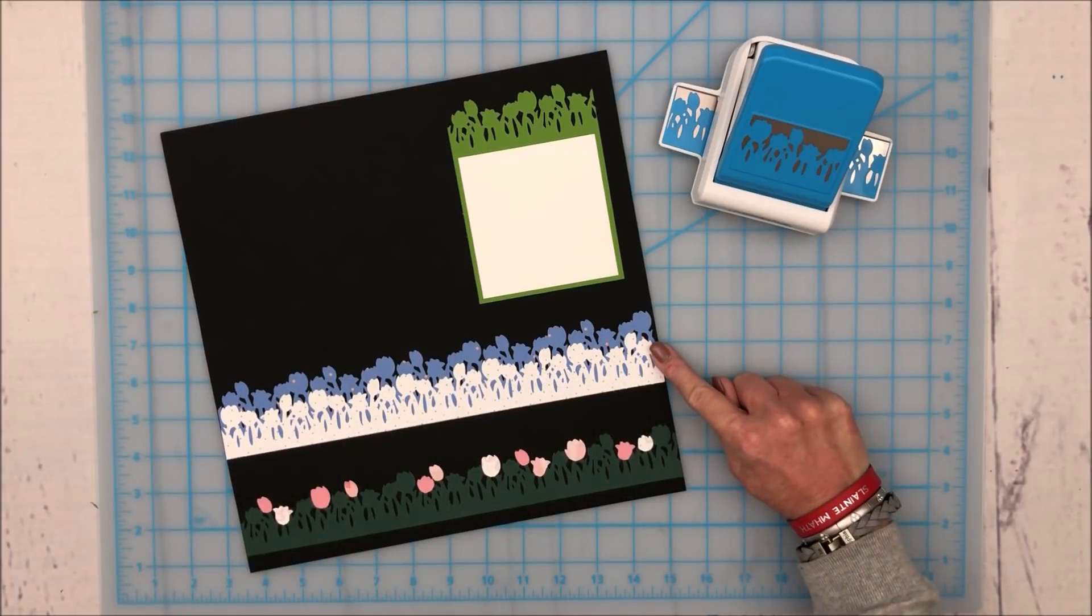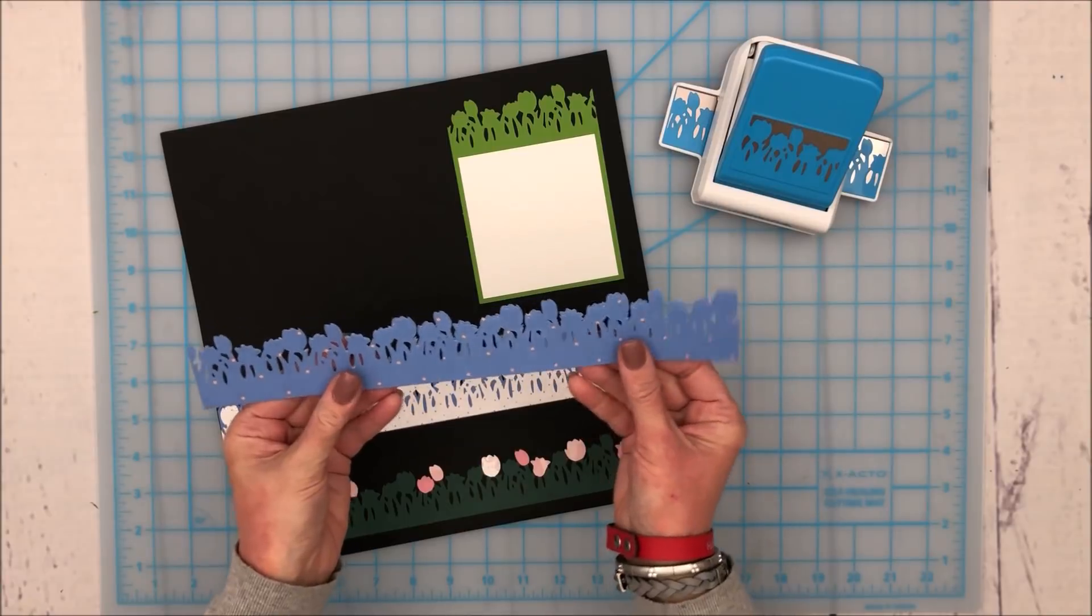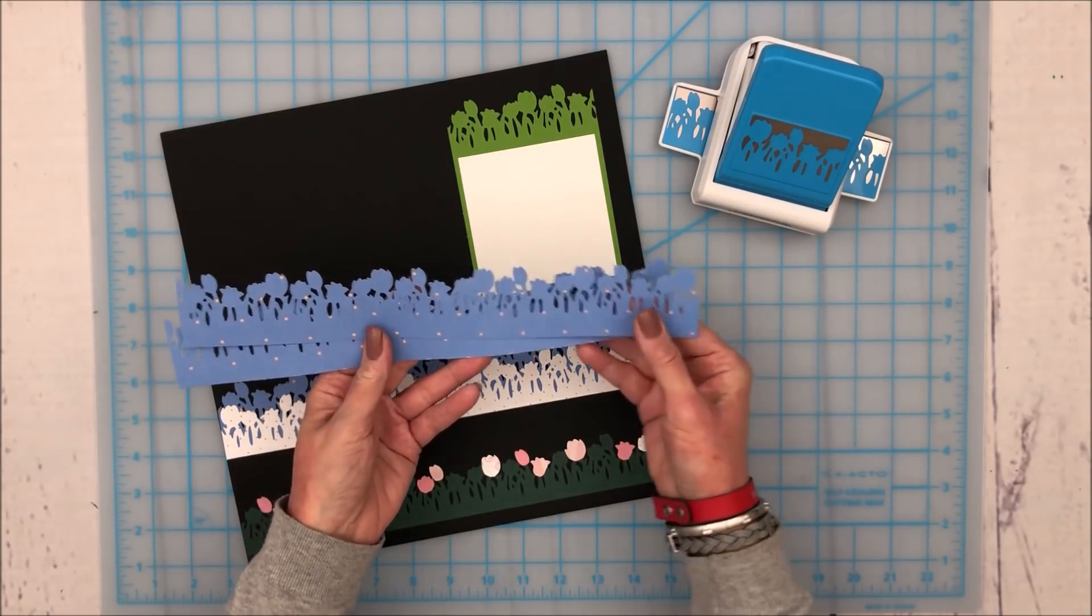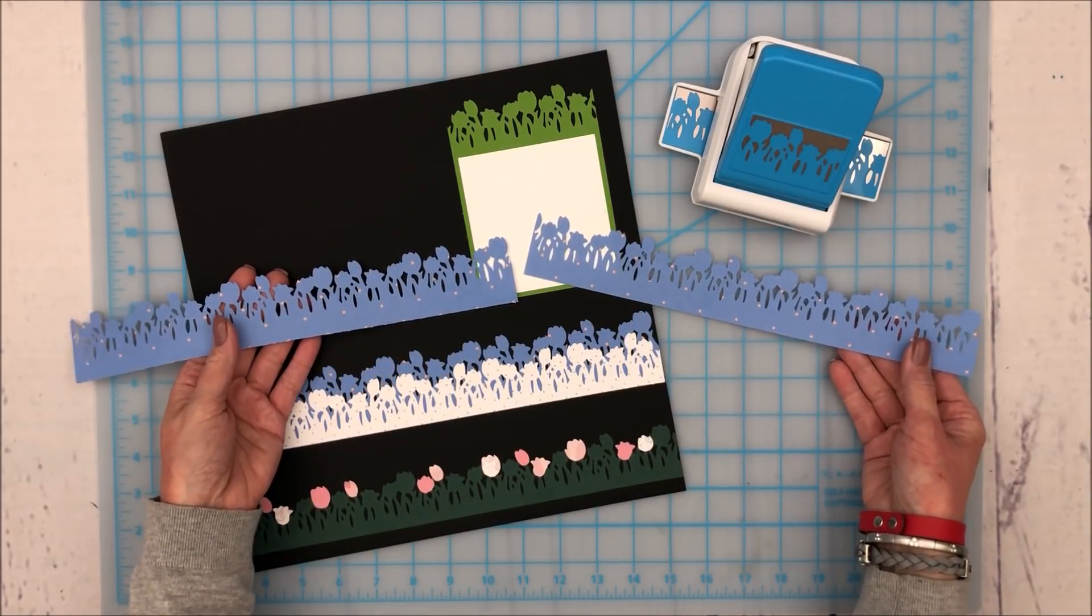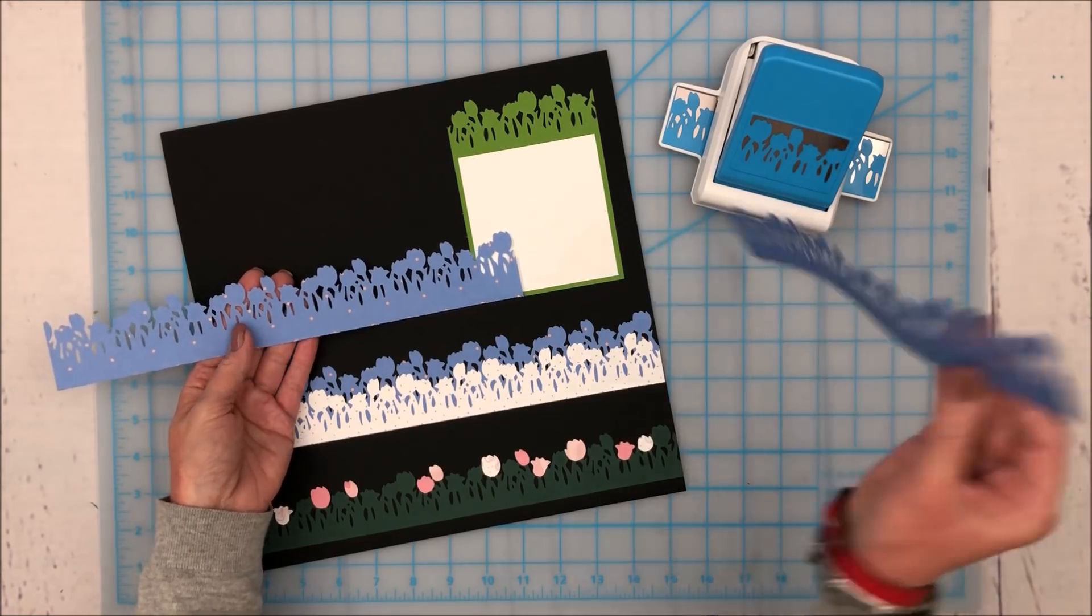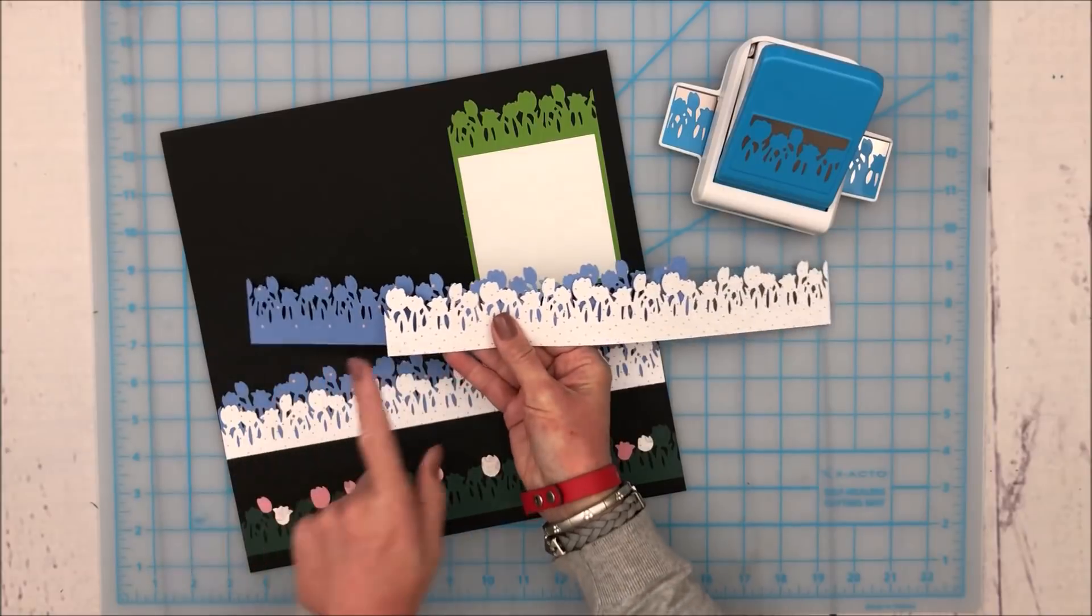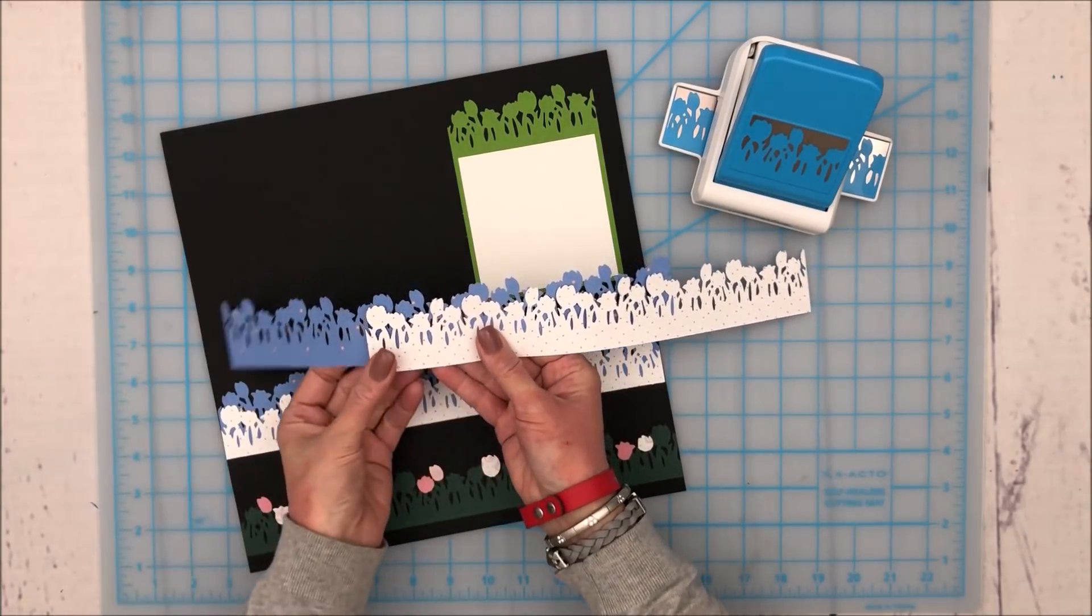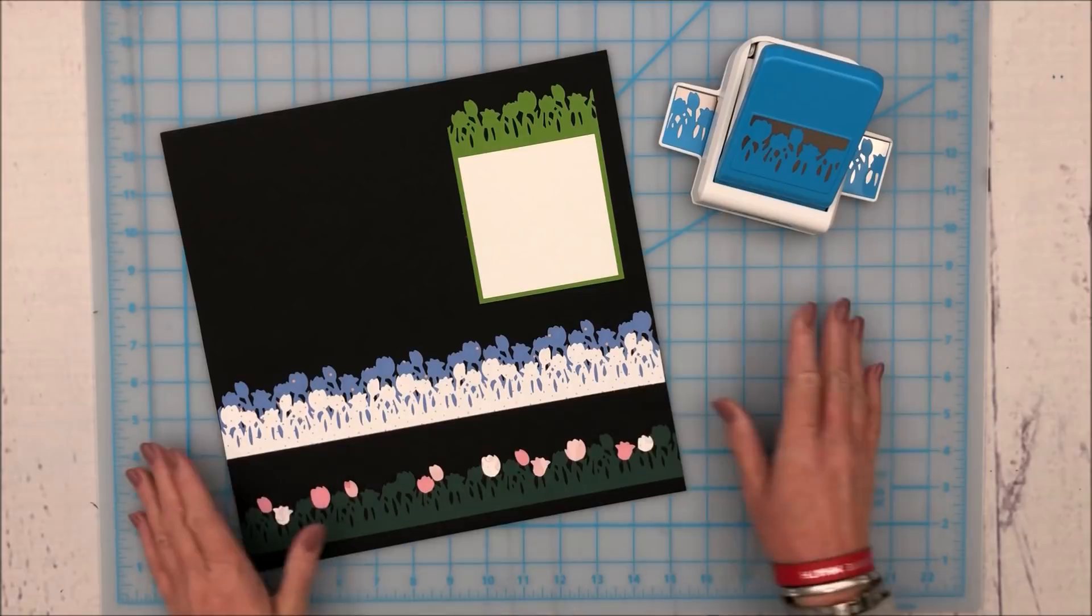Now for this border I've simply punched out two strips, identical strips from the same double-sided pattern paper. This happens to be the blend and bloom blue paper, and then when I turn one of them over you can see that some of the flowers will be facing in that direction and some of them will be facing the opposite direction. So when you layer them over top of each other, you get a really lovely varied effect.